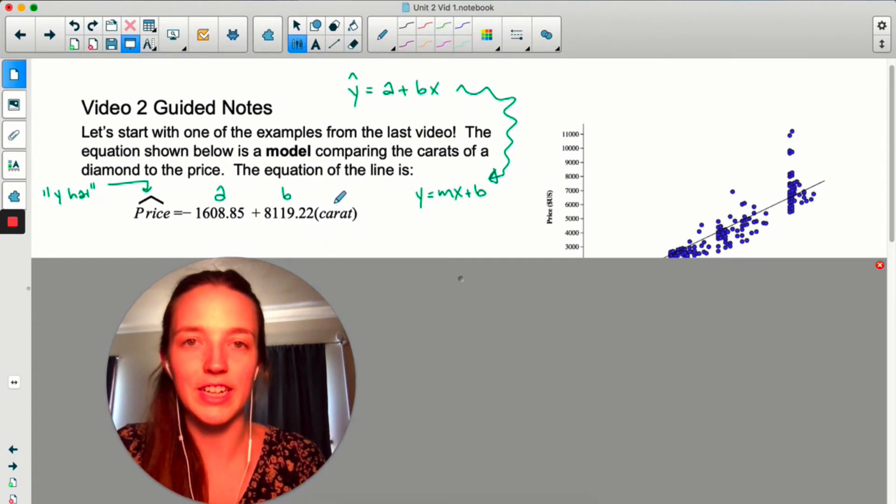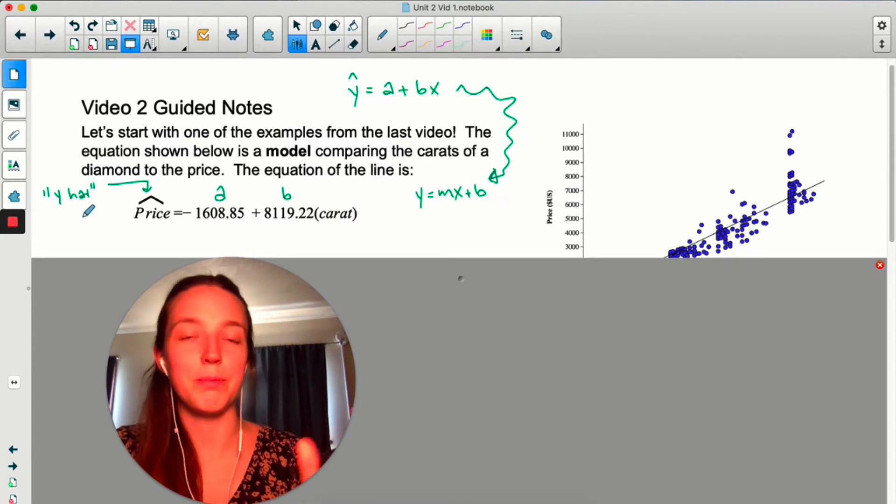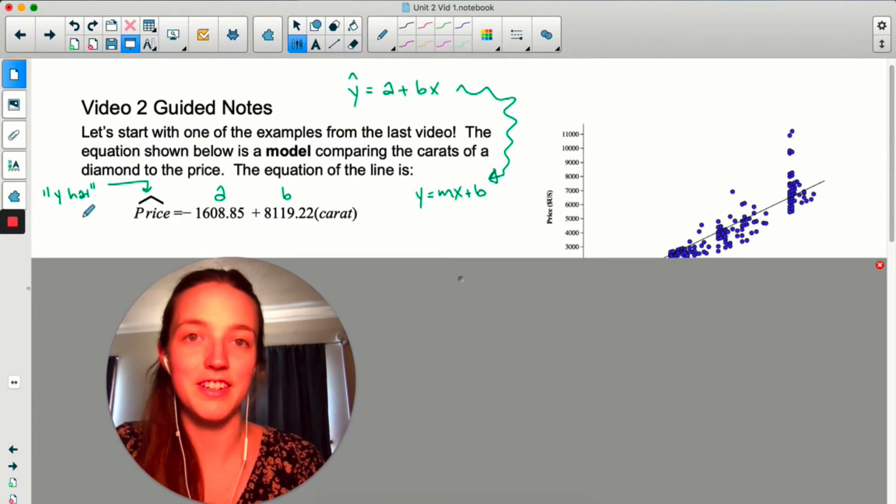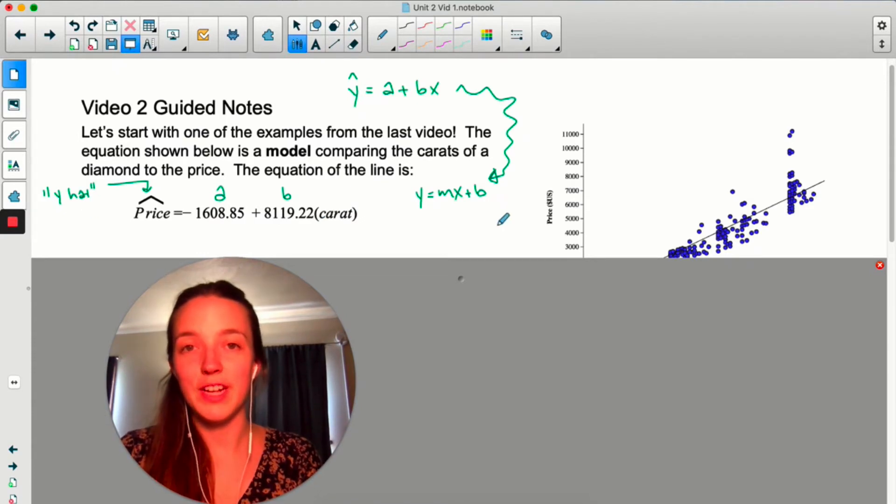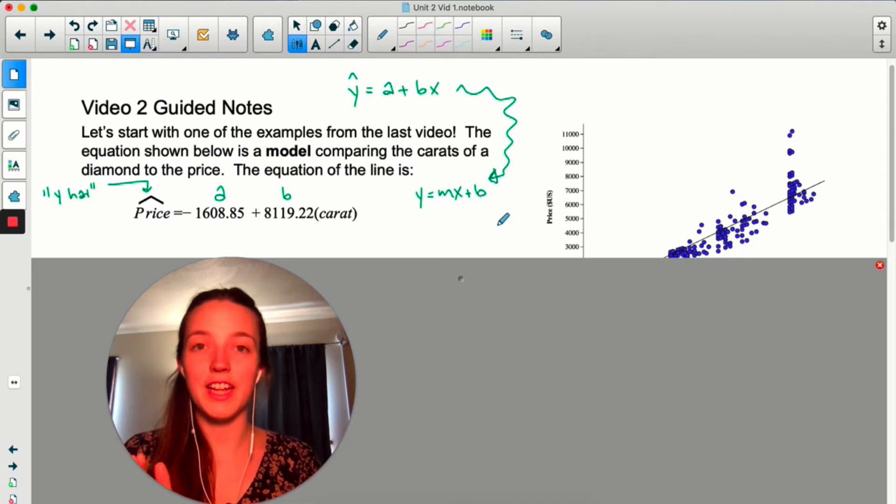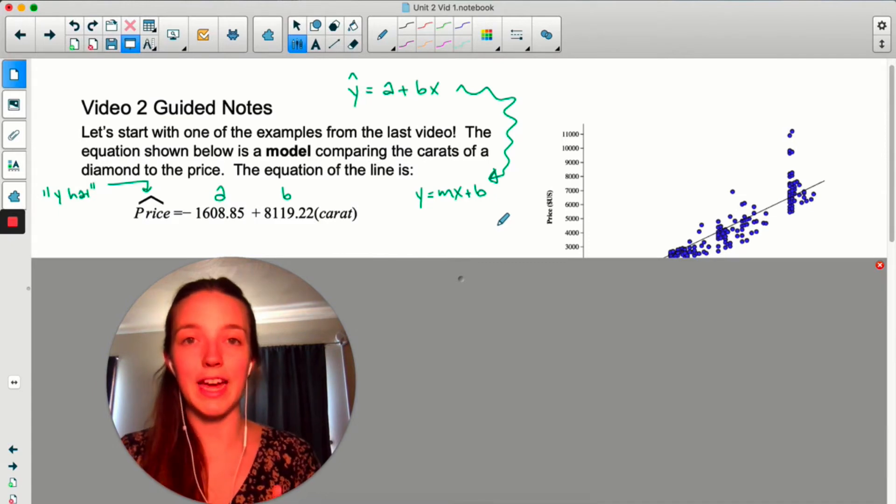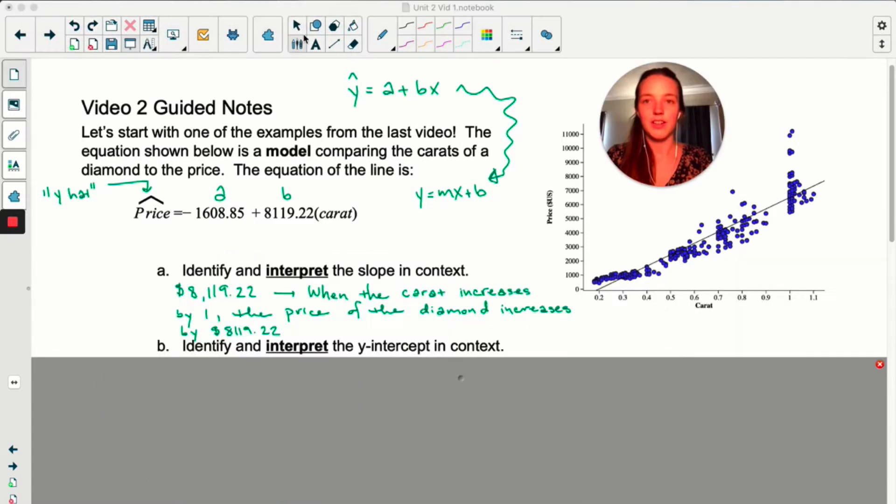So anyway, all that to say, this is the equation for this scatter plot. You plug in a value for carat and it'll give you a predicted value for the price of that diamond. So what I'd like you to do next is pause the video and try the rest of the page. I think you'll be able to do it.